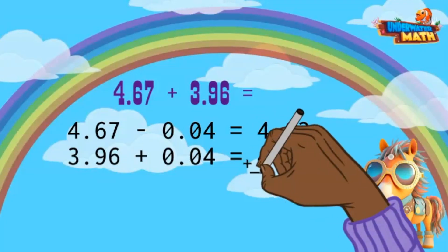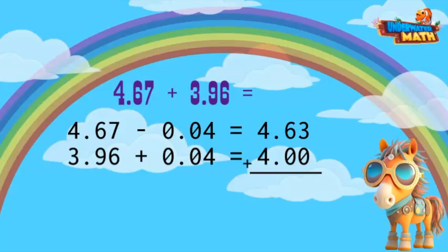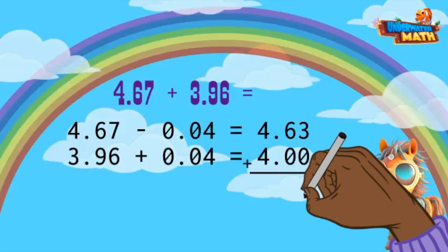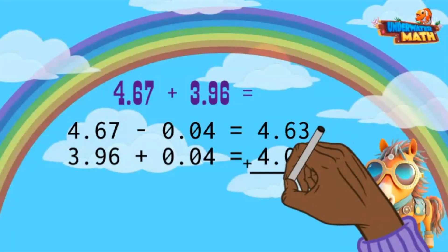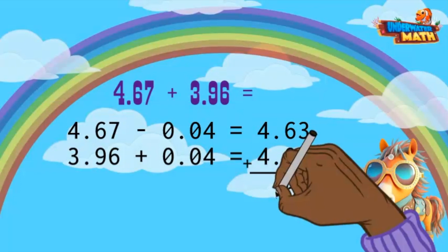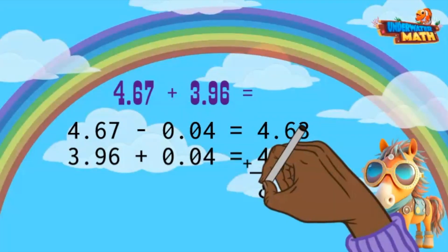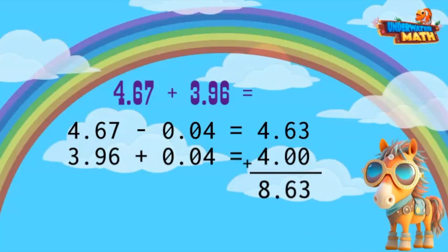Let's make sure our decimals are aligned and start adding in the far right place value. The hundredths: three plus zero is three. Now the tenths: six plus zero equals six. And the ones: four plus four equals eight. So four and sixty-seven hundredths plus three and ninety-six hundredths equals eight and sixty-three hundredths. My little cowpokes, you're doing great!